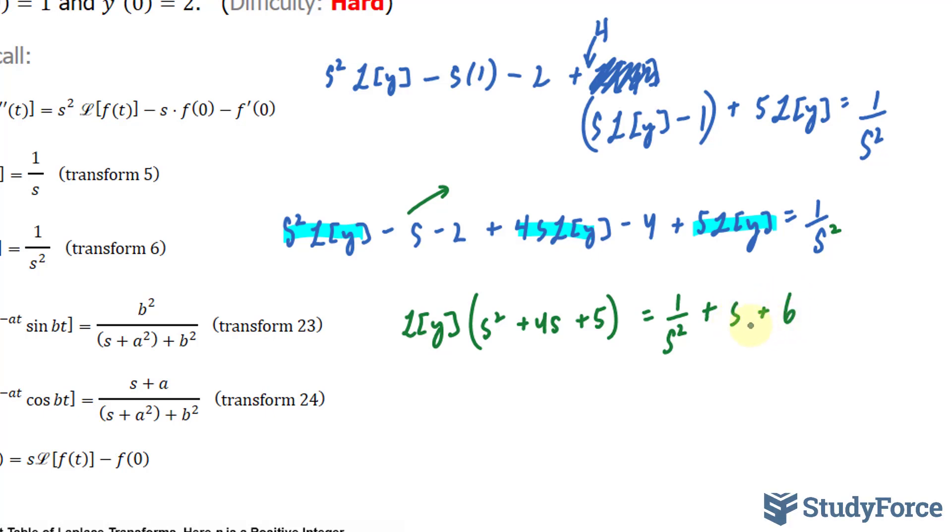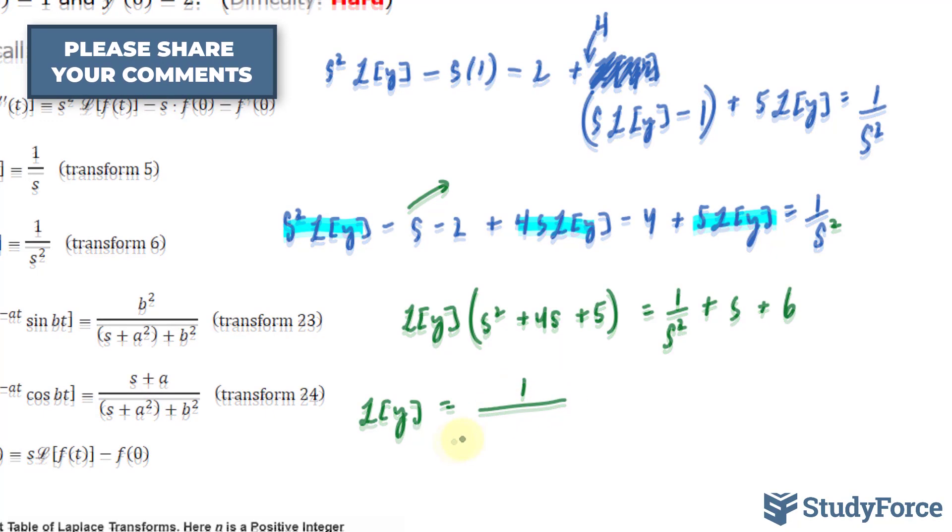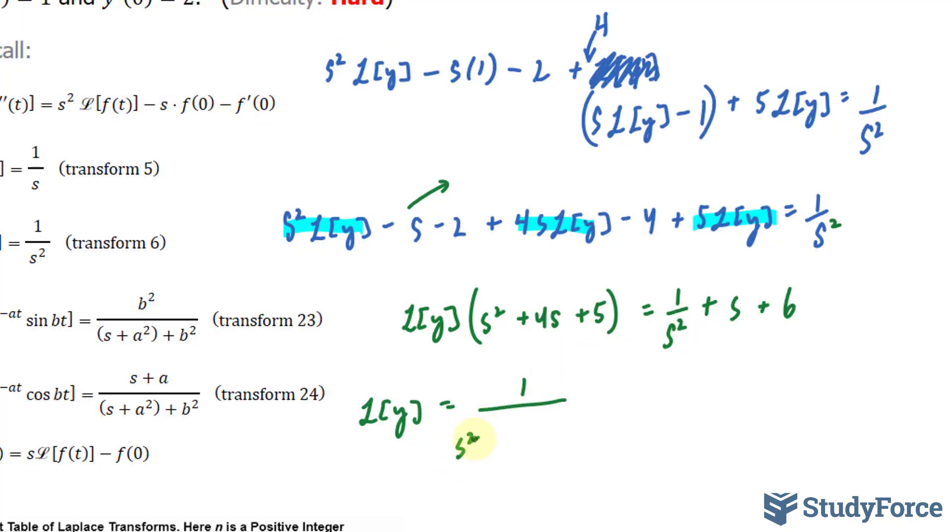Believe it or not, the easy part is done. All I have to do from here is divide both sides by this expression, and if I do that, I end up with the Laplace transform of y is equal to, and I'll rewrite it like this, 1 over s^2, multiplied by this expression, s^2 plus 4s plus 5, and I'll combine these as s plus 6 all over the same expression.